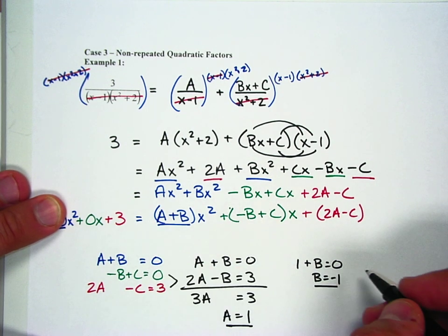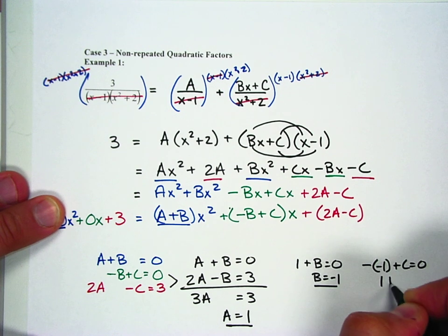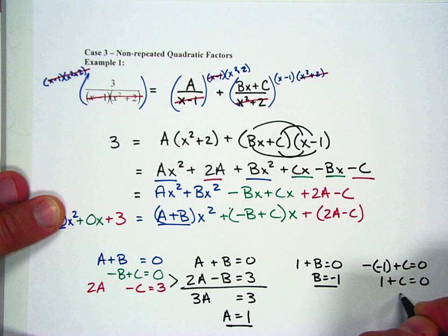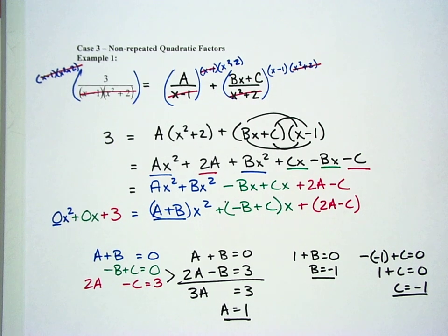B must be negative 1. And if negative 1 plus C equals 0, that means 1 plus C equals 0. C must also equal negative 1. And so now there's my three variables. All right? My A, B, and C.